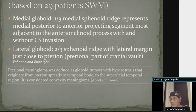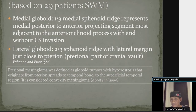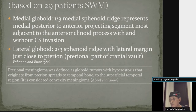Tumors arising from the medial one-third of the sphenoid ridge represent the medial group, projecting posterior to anterior, most adjacent to the anterior clinoid process, with and without cavernous sinus invasion. Lateral globoid tumors comprise the two-thirds of the sphenoid ridge with the lateral margin just close to the pterion. The pterion is the pterional part of the temporal fold. We therefore redefine pterional meningioma as a globoid tumor with hyperostosis originating from the pterion, spreading to the temporal bone and the superficial temporal region. This group of tumors is therefore considered convexity meningioma.